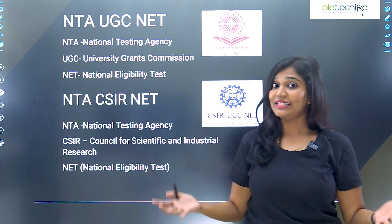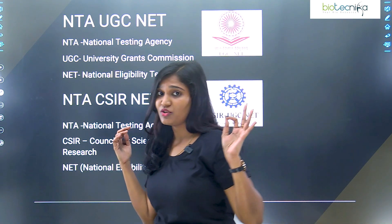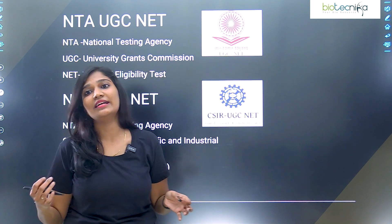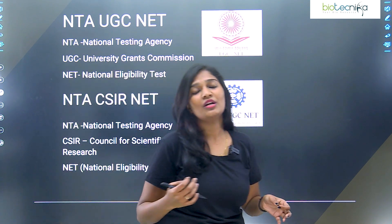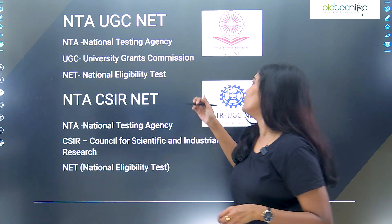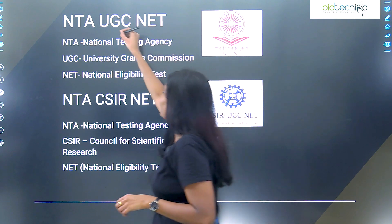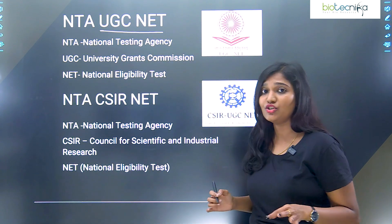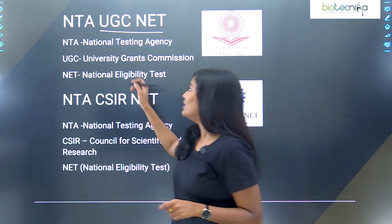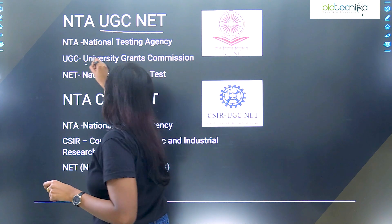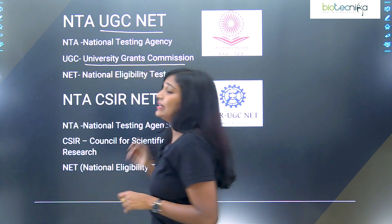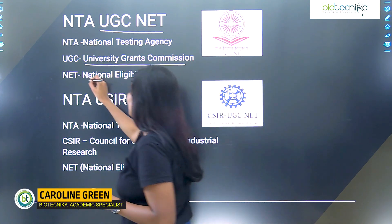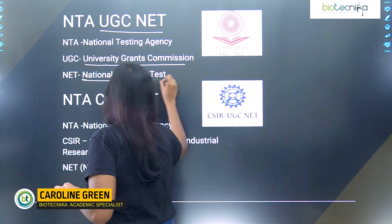Let's start with a question: what's the difference between UGC NET and CSIR NET? I'm going to deal with UGC NET first. NTA stands for National Testing Agency, UGC stands for University Grants Commission, and NET stands for National Eligibility Test.